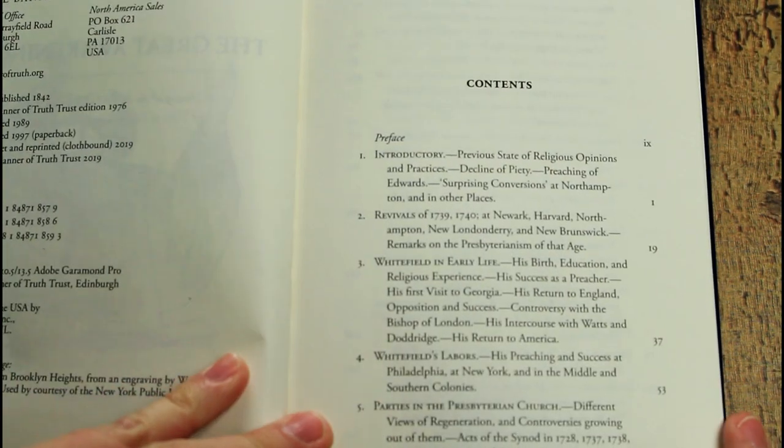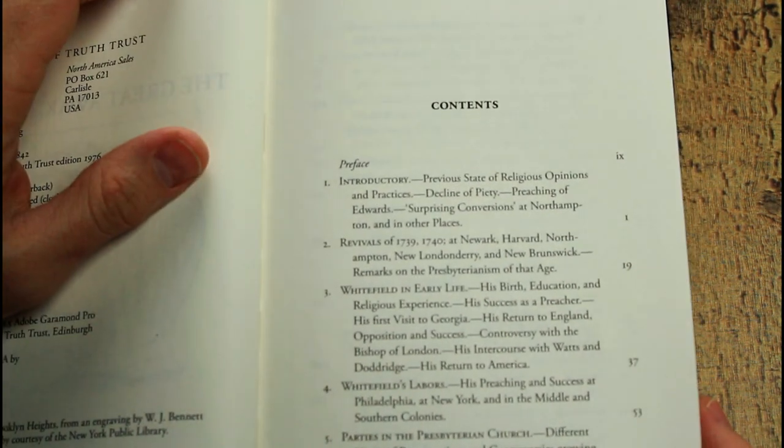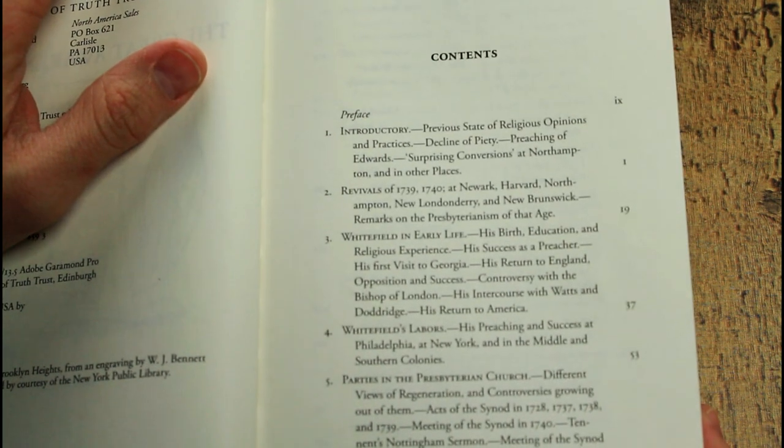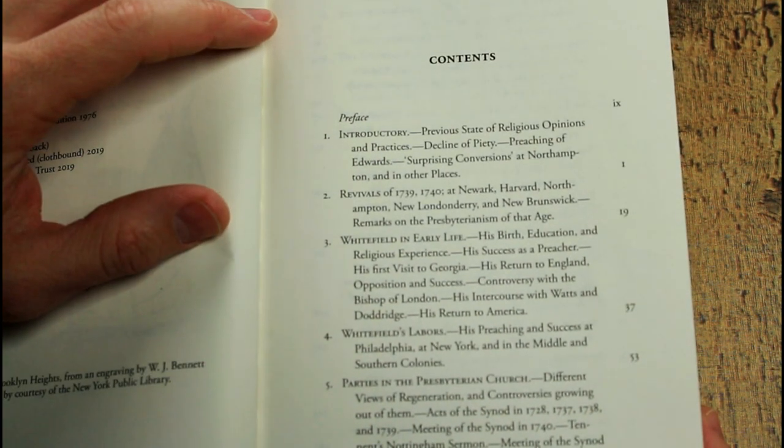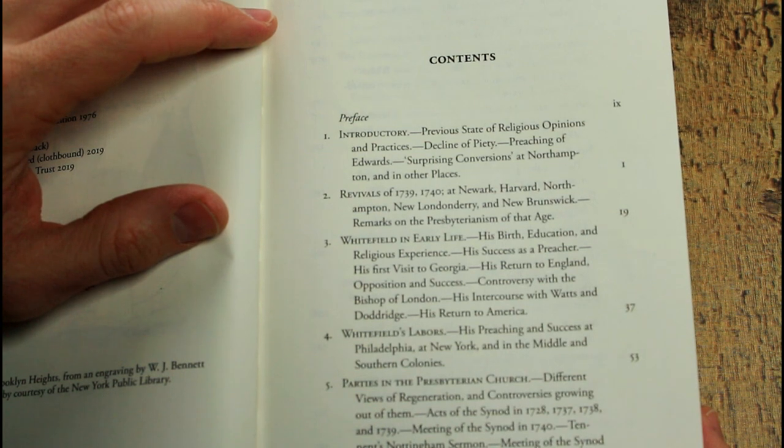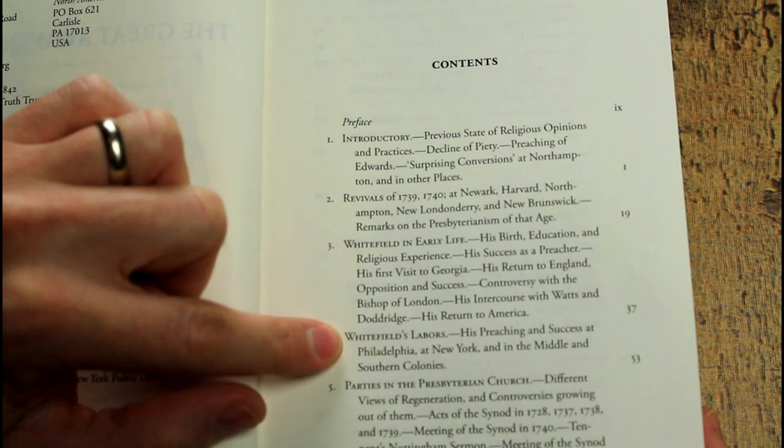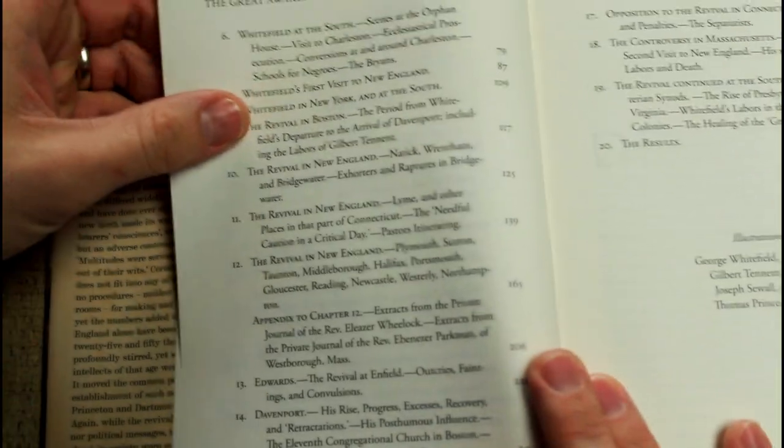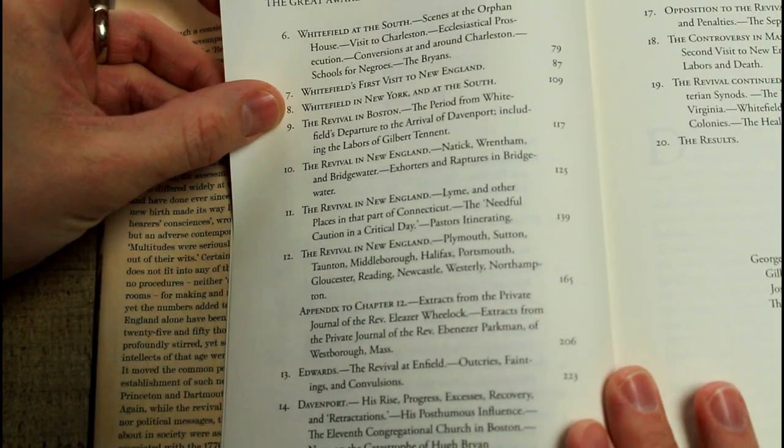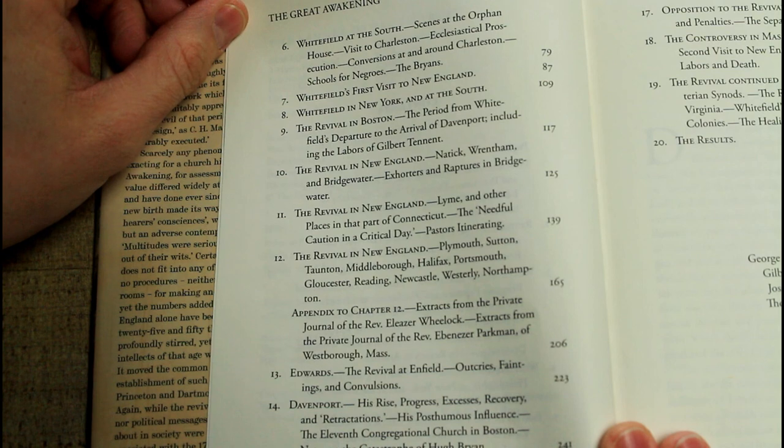Just a brief look at the table of contents. I want to spend most of our time looking at sections from the book, but just to give you a feel for what the book covers. It's a book covering the Great Awakening in America and particularly looking at the ministry of Whitefield. You'll see his name come up a lot here, his early life, his labors.